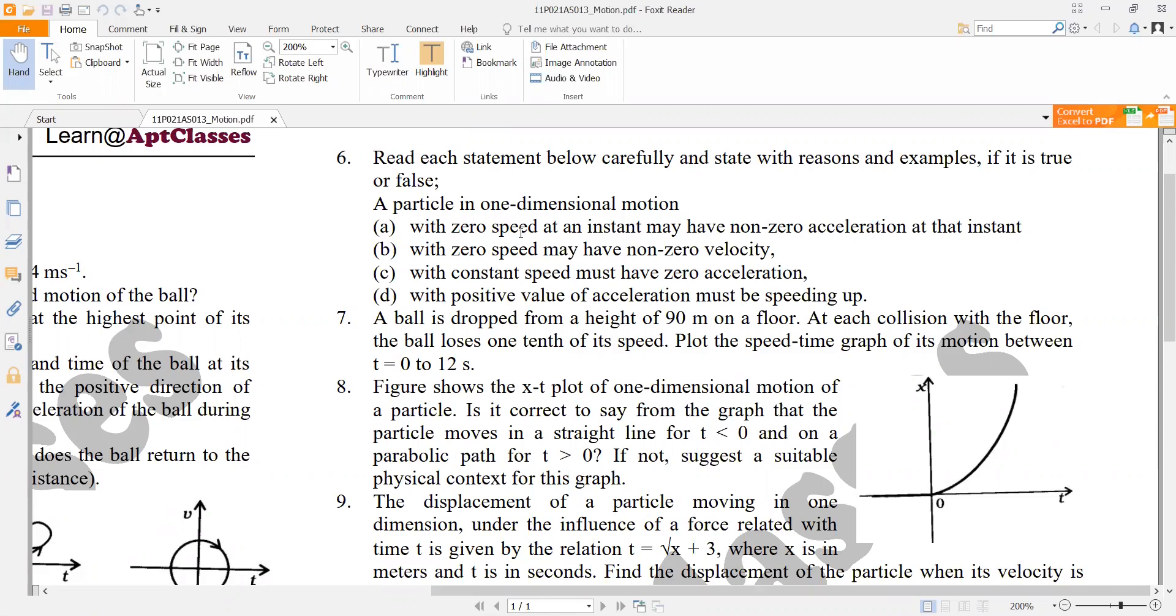How can we think about it? Suppose if we have some object thrown upward, we know that the body goes up, and then the moment it reaches the highest point, its speed becomes zero, but the gravitational acceleration is still there.